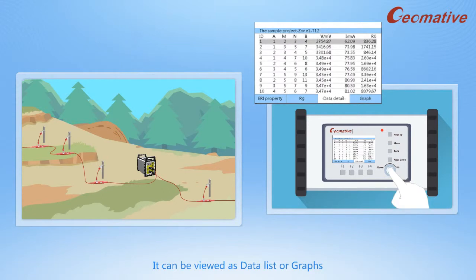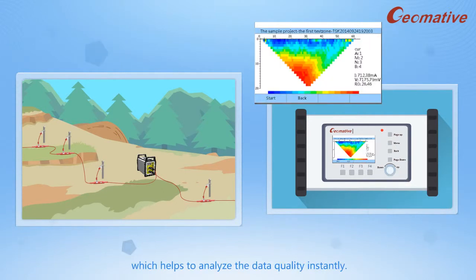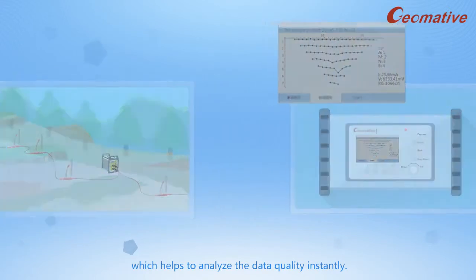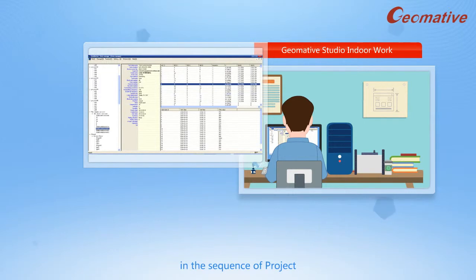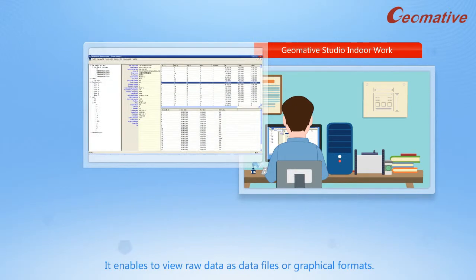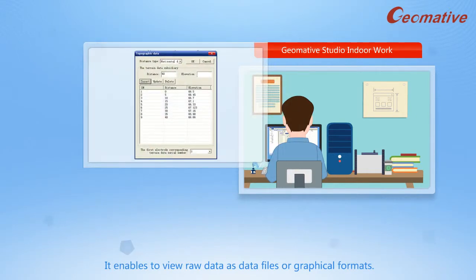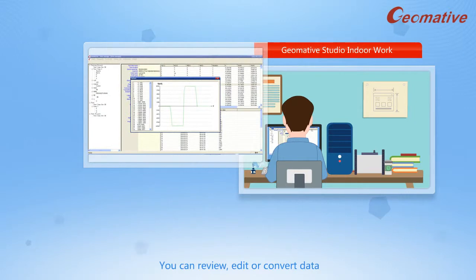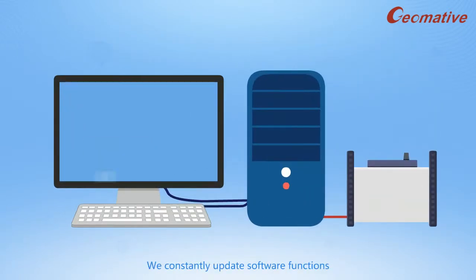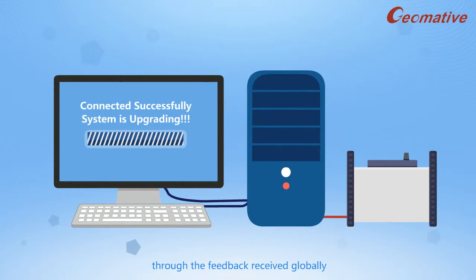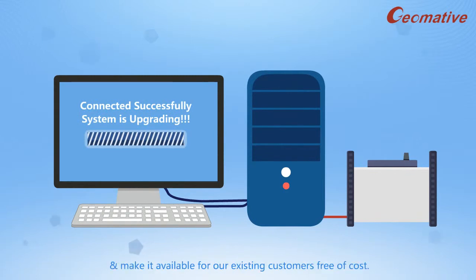It can be viewed as a data list or graphs, which helps to analyze the data quality instantly. Geomative Studio software helps to view the data file in the sequence of project, test the zone, and task by synchronization process. It enables viewing raw data as data files or graphical formats. You can review, edit, or convert data for processing with other softwares. We constantly update software functions through feedback received globally and make it available for existing customers free of cost.